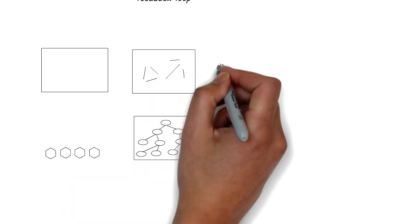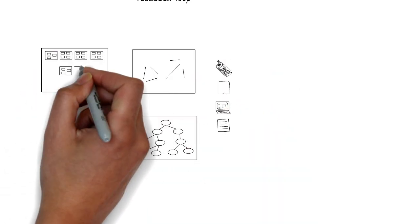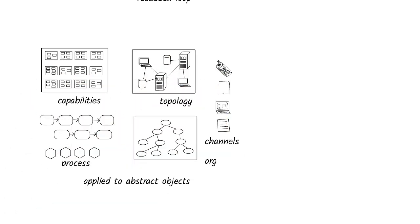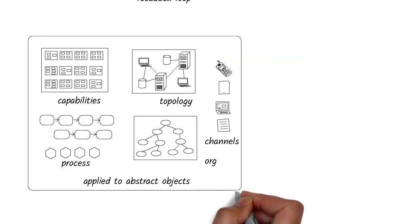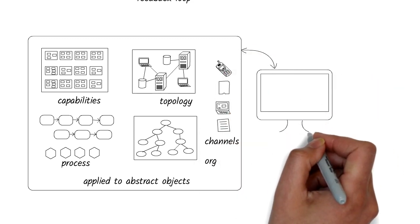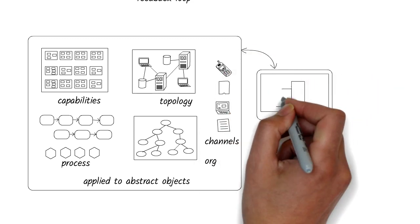While the digital twin is a digital model of the physical object, why not apply this concept to abstract models like business processes, organizational structure, a capability, or a system topology? All we need is the right proxies for sensors that can create the digital model.